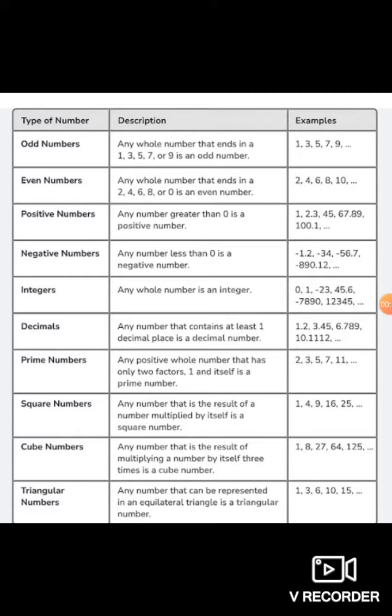Okay, even numbers. Any whole number which ends in 2, 4, 6, 8 or 0 is an even number. 2, 4, 6, 8, 10, 20, 25, 26, sorry, 24, 38.